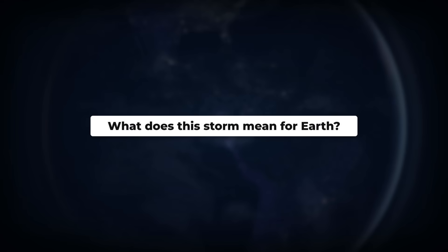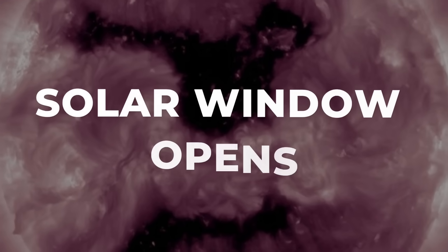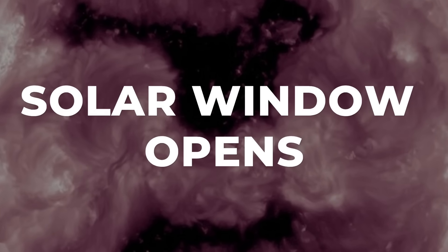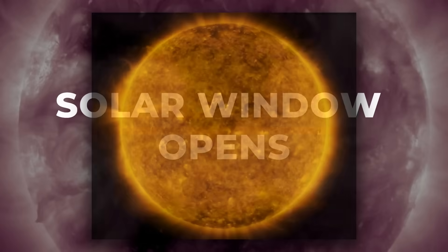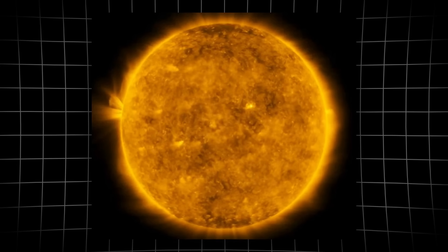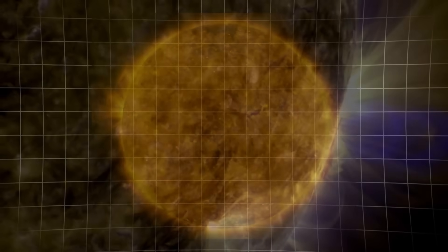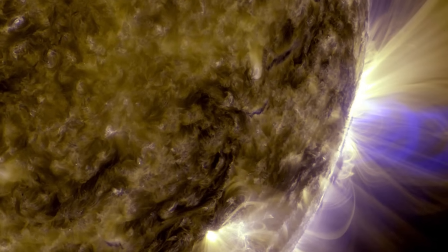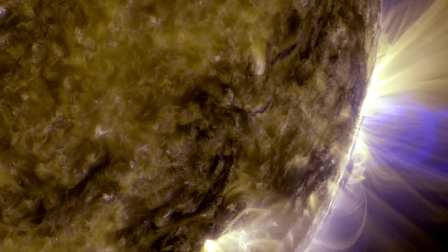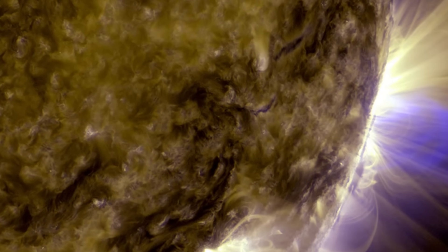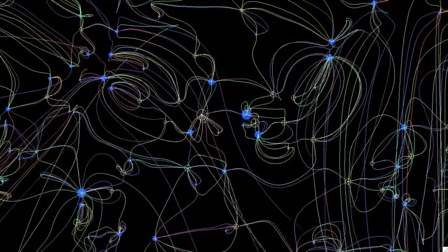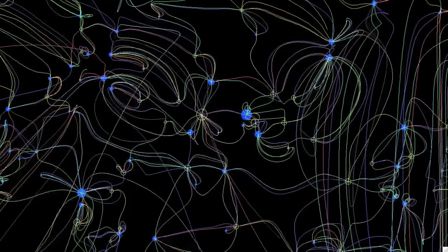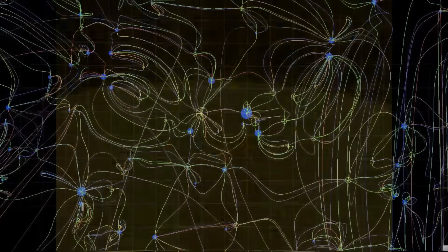A coronal hole is not a hole in the Sun, but a region where the solar atmosphere thins and the magnetic field lines stretch out, unanchored, into space. Most of the Sun's surface locks its magnetic fields into tight, looping arcs, trapping hot plasma. But inside a coronal hole, those lines open wide, like a gate left ajar, letting charged particles escape at extraordinary speeds.